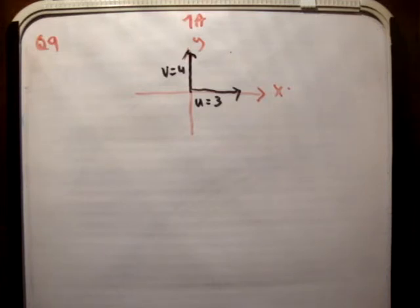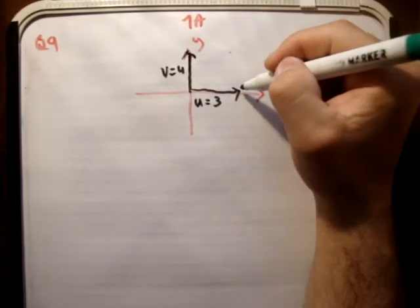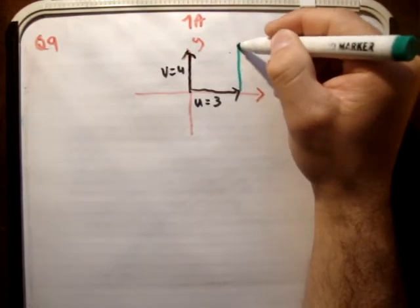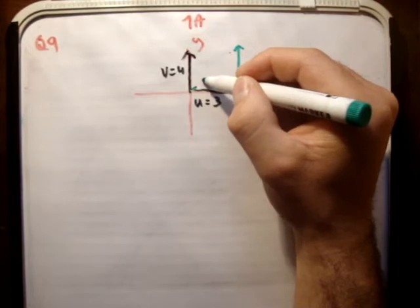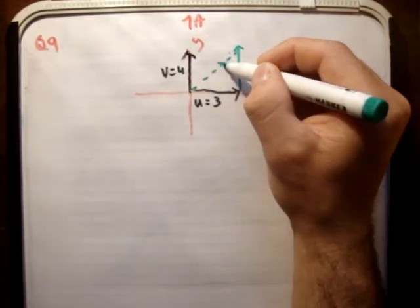And you draw your resulting vector from the tail of the first to the head of the second. So this is the vector u, so I draw the vector v on the head of vector u, and I draw my resulting vector from the tail of the first to the head of the second.